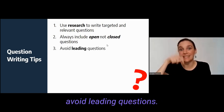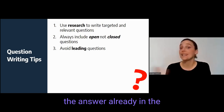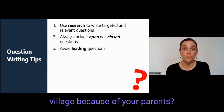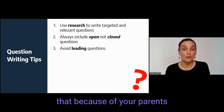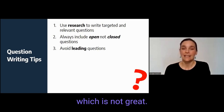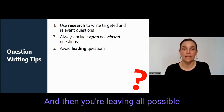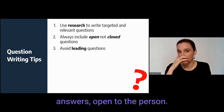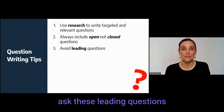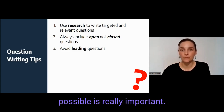Students also need to be careful to avoid leading questions — questions in which you've implied the answer already. For example, 'Did you move away from that village because of your parents?' implies that the parents were the reason. It's also a closed question, which is not great. A less leading question would be: 'Why did you move away from that village?' — leaving all possible answers open. Especially when students have a particular research focus, they can sometimes ask leading questions without really thinking about it. Making sure questions are as open-ended as possible is really important.